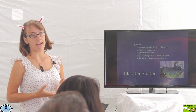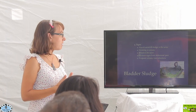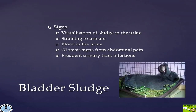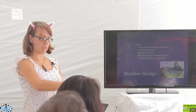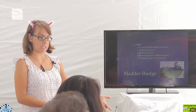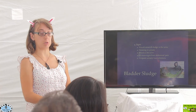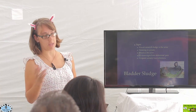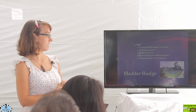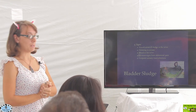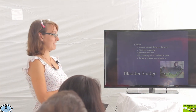Signs of bladder sludge can be variable. One obvious sign is seeing sludge in the urine — dried residue that looks like clumped sand on a towel, for example. If your rabbit is acting totally normal but produces urine that looks like that, you know there's a problem that needs addressing. However, rabbits don't always make diagnosis easy.